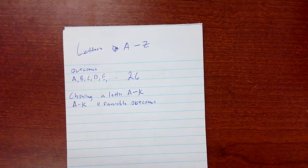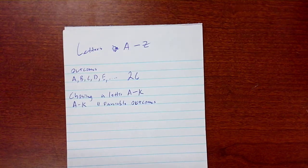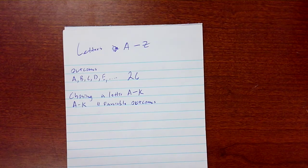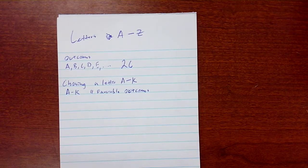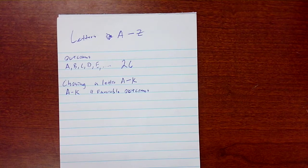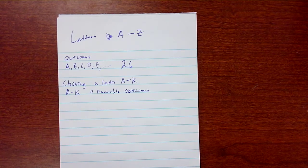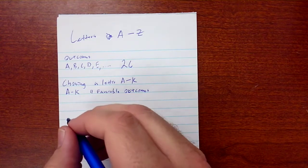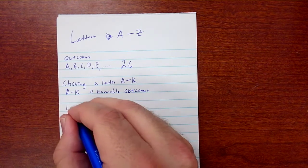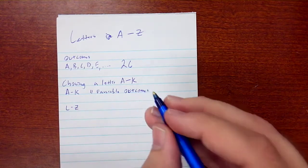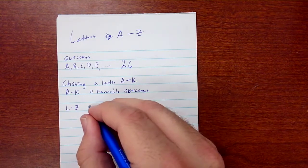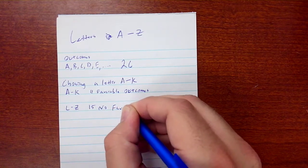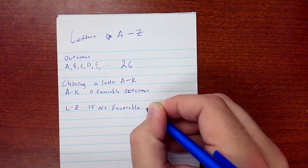We're not going to list them all just for the sake of time and space on paper. So letters A through K, we have 11 favorable outcomes, which would mean we have letters L through Z, which would give us 15 non-favorable outcomes.